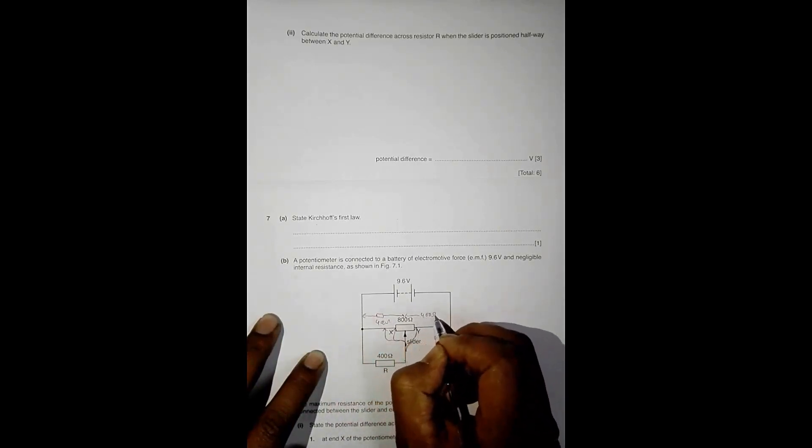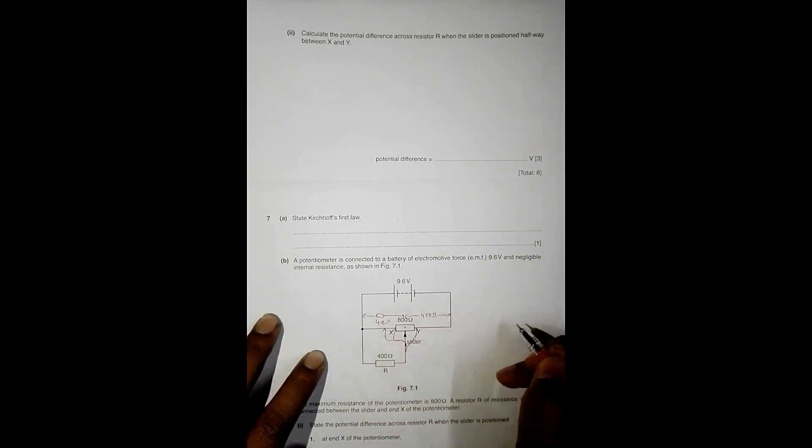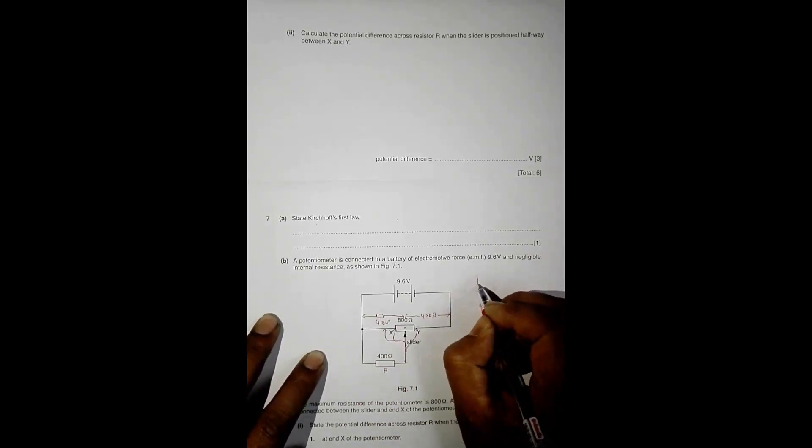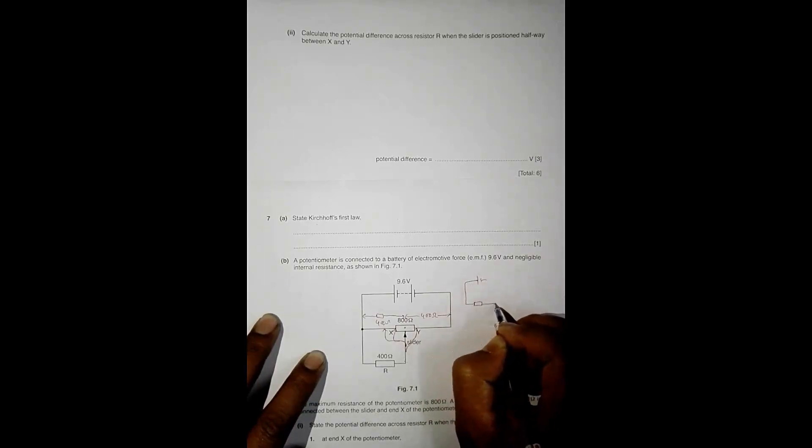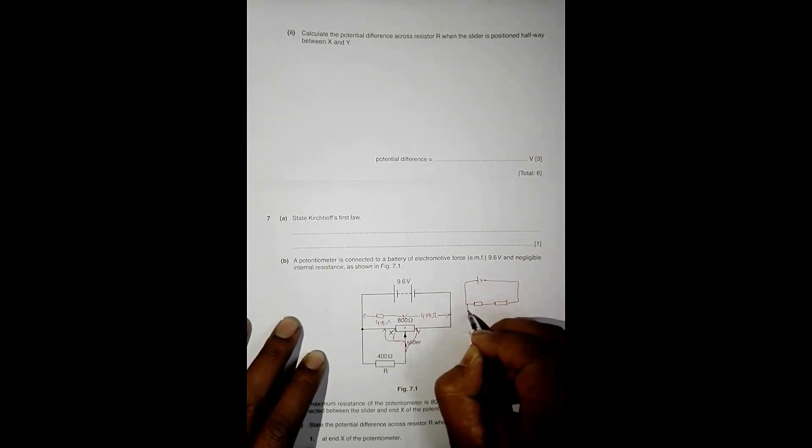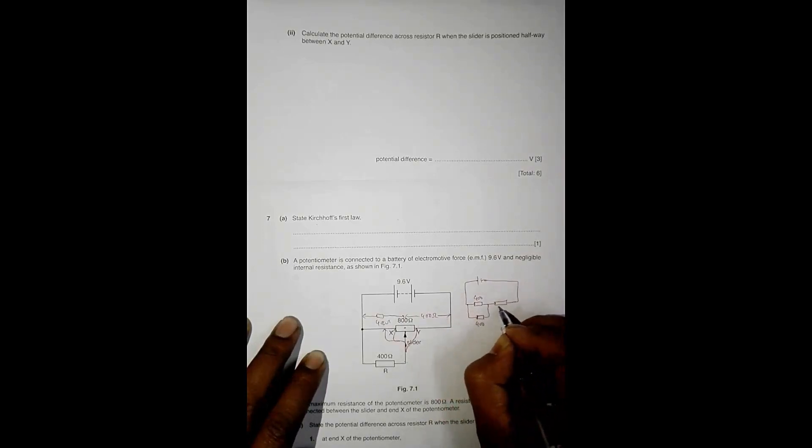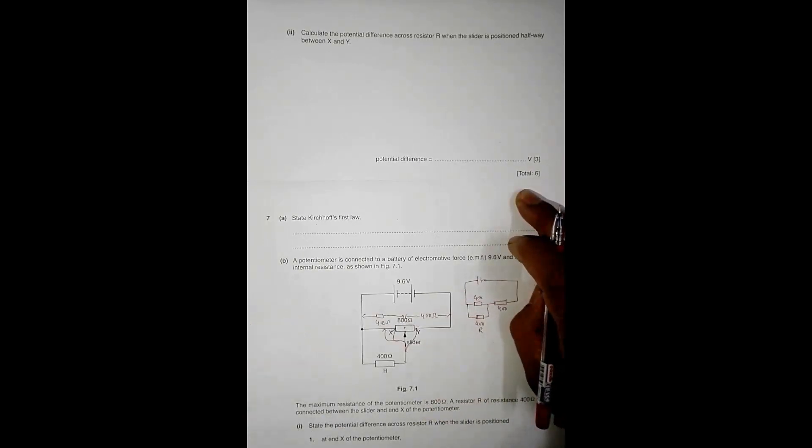So 400 here and 400 here. Now the circuit will look somewhat like this. So let me redraw the circuit here. It will be like this: this is 400 ohms, this is 400 ohms, and then this is 400 ohms. So it is 400, 400, and then 400. This is R as well.